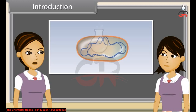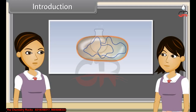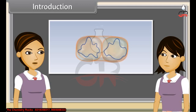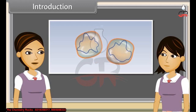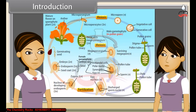As we have already discussed, reproduction is the ability of all organisms to produce young ones similar to themselves in most of characters. The process which involves fusion of male and female gametes to form a new individual is known as sexual reproduction.